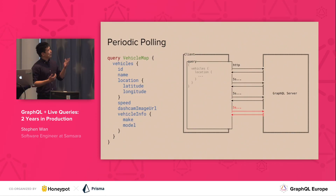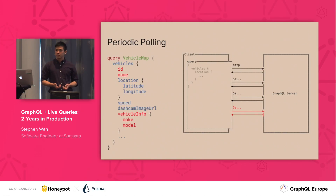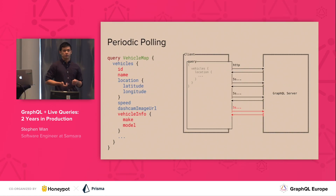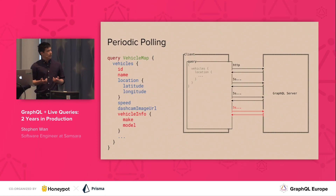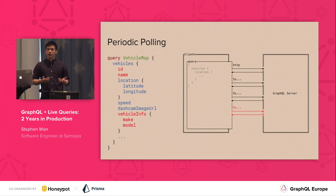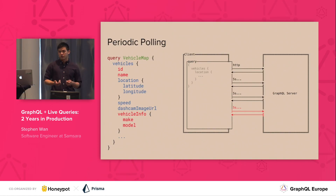This approach isn't super efficient. We might end up sending a lot more data than we actually need. For instance, the vehicle ID, name, make, and model almost never change, but we'd still be sending them every time. In a degenerate case with 1,000 vehicles during off hours where only one or two are moving, we'd still be computing and sending the entire payload over the wire every five seconds even though we don't really need it.